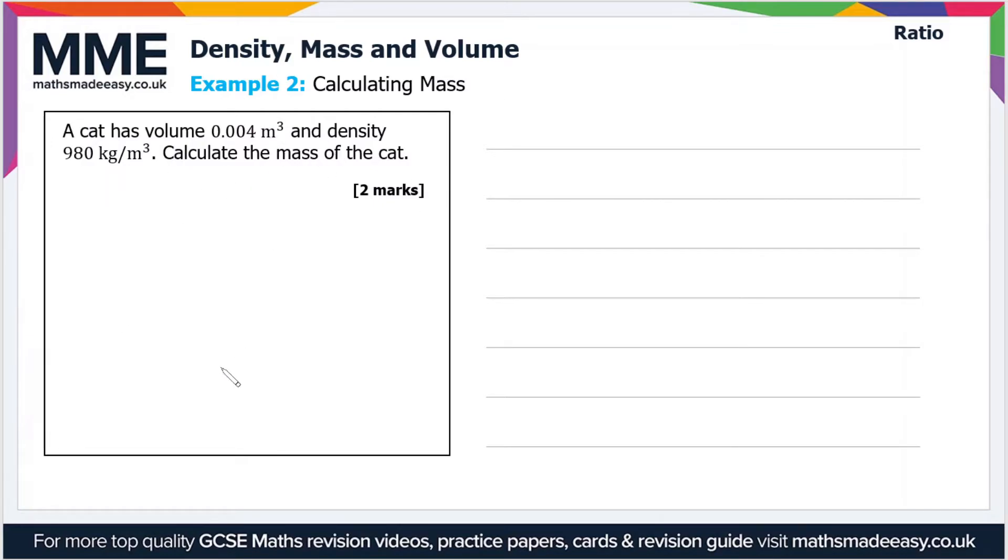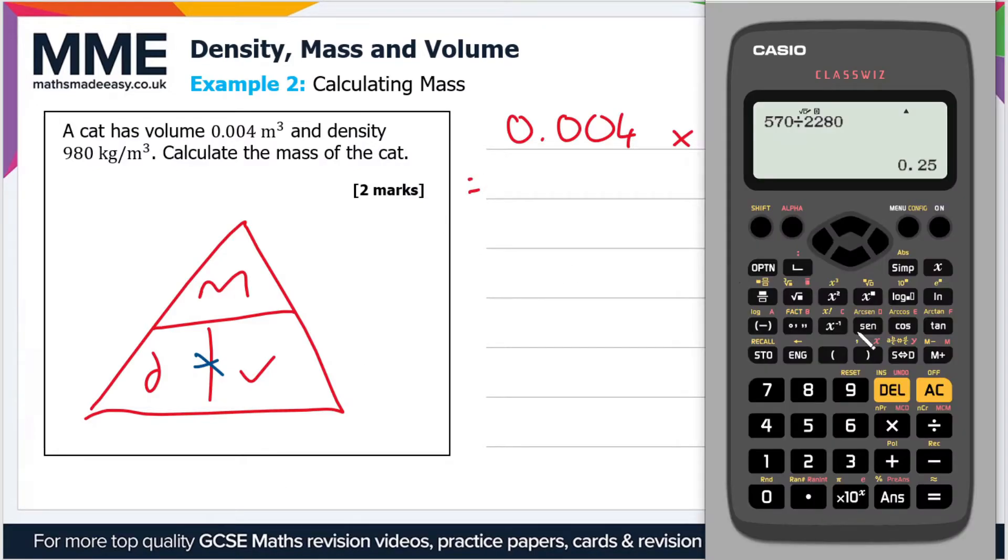Once again, draw the triangle. This time mass is on the top and we have density and volume on the bottom. To work out the mass, we just multiply the density and the volume, so we have a volume of 0.004 multiplied by 980.